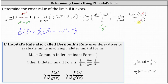Simplifying, we're left with the limit as x approaches infinity of just three times e to the power of one divided by x. We already know as x approaches infinity, e to the power of one divided by x is approaching e to the zero, which equals one. Therefore the limit is equal to three times one, which is equal to three.